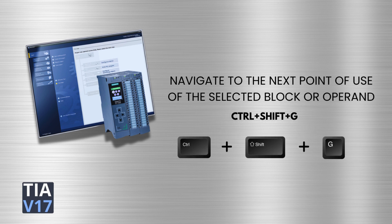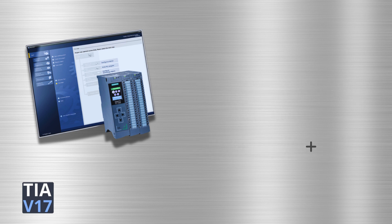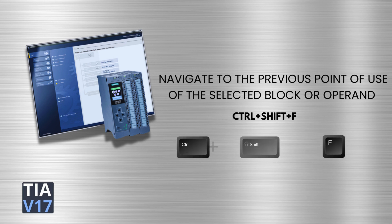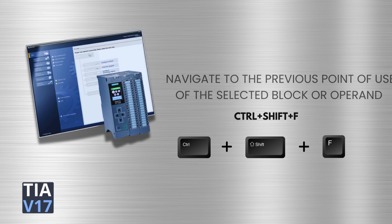To navigate to the next point of use of the selected block or operand, the shortcut key is Ctrl plus Shift plus G. To navigate to the previous point of use of the selected block or operand, the shortcut key is Ctrl plus Shift plus F.